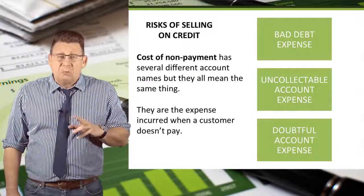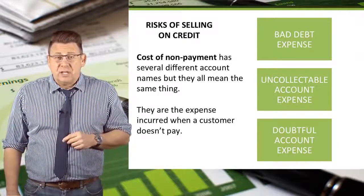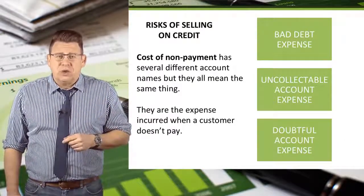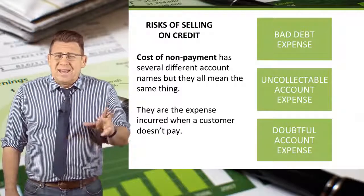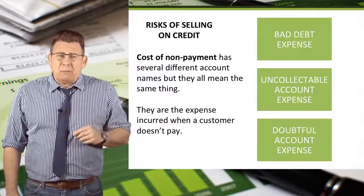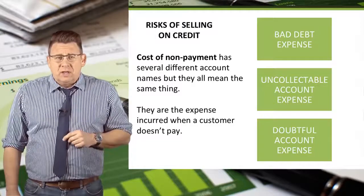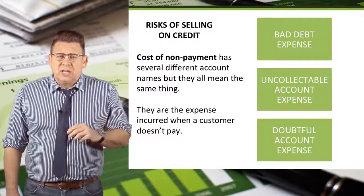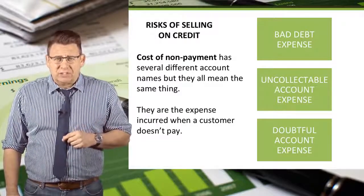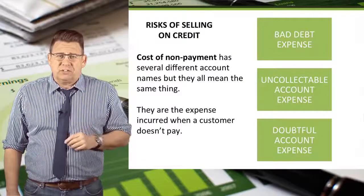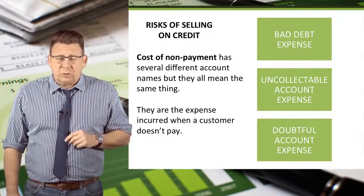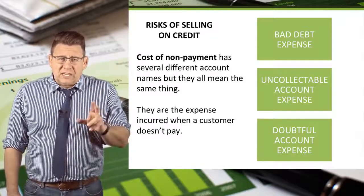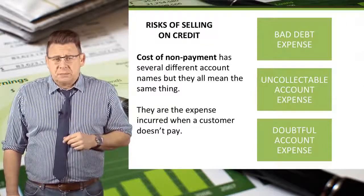This cost is known by a number of different account names depending on the textbook you are using or the company that you are working for. Bad debt expense is probably the most common term, but sometimes uncollectible account expense or doubtful account expense might be used. These terms are all interchangeable. The key is the word expense.